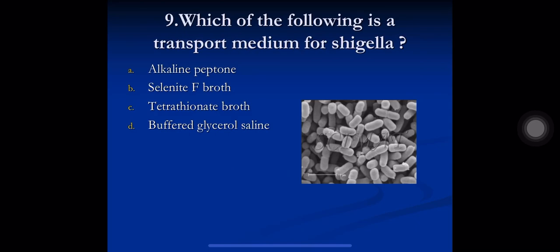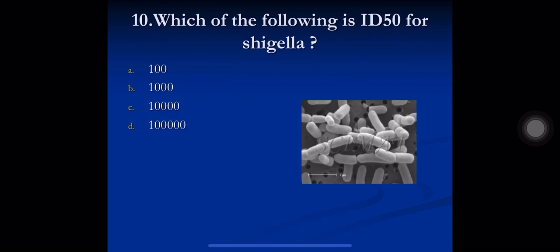Question 9: which of the following is a transport medium for Shigella? A) Alkaline peptone, B) Selenite F broth, C) Tetrathionate broth, D) Buffered glycerol saline. The correct answer is D) buffered glycerol saline, which is used as a transport medium for Shigella.